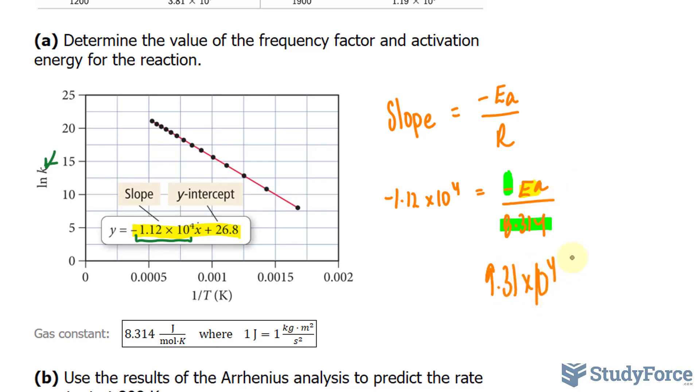And the units here, be careful, because the units here were joules per moles times K, Kelvin. And the units here were Kelvin, so the K units canceled out after we multiplied the two numbers, leaving us with joules per mole.